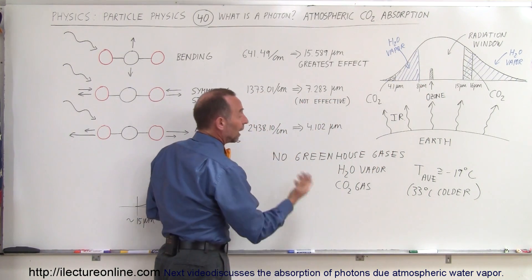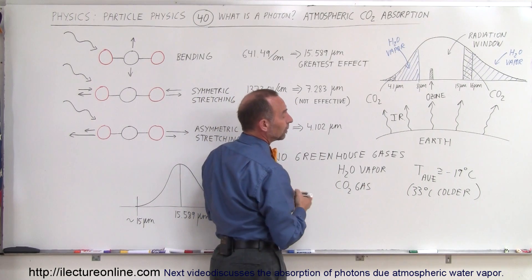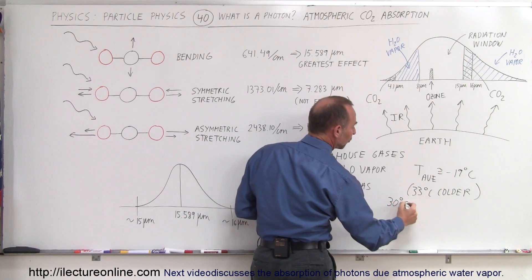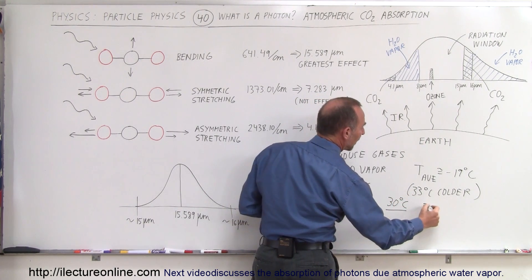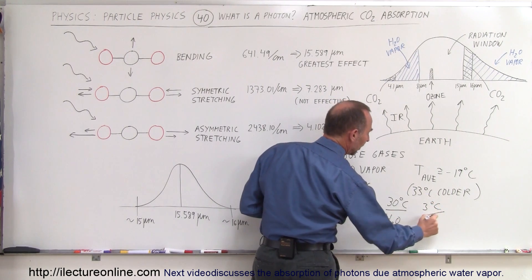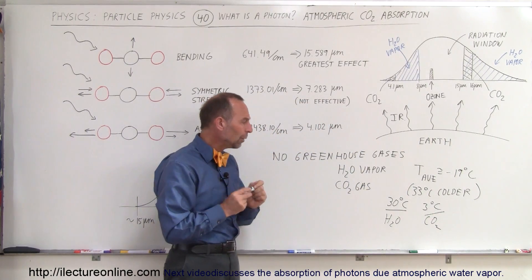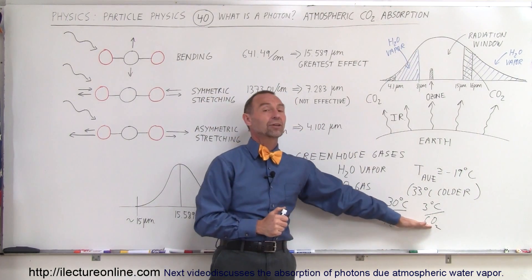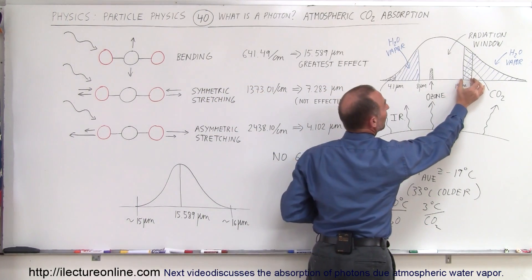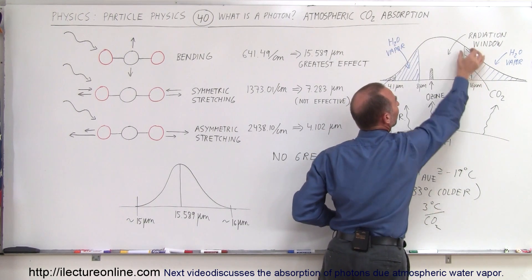Now what would happen if you were to double the carbon dioxide in the atmosphere? We know that the split between absorption and temperature difference is about 30 degrees warmer because of water vapor, and about 3 degrees warmer because of carbon dioxide. Doubling the carbon dioxide in the atmosphere wouldn't do much to the amount of energy absorbed, because the energy is already almost completely absorbed right here in this band.